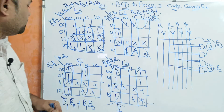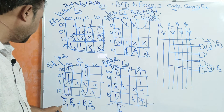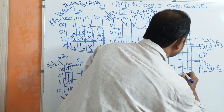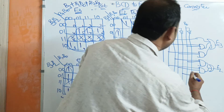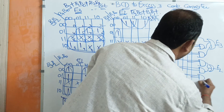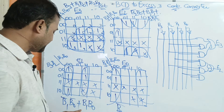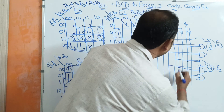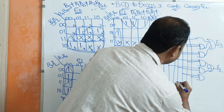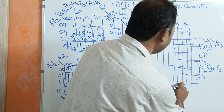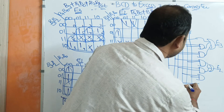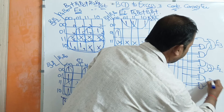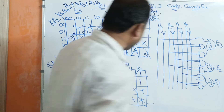For E1, the expression is B1'·B0' + B1·B0. We AND B1 bar with B0 bar, then AND B1 with B0. We OR those two results together to get E1.